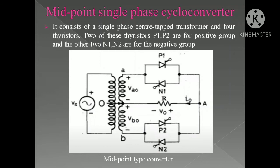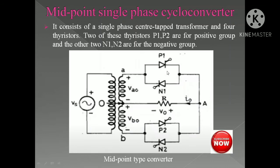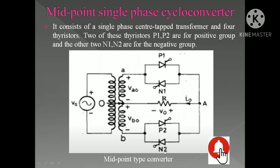Let me show you the electrical equivalent circuit diagram for this midpoint single phase cycloconverter. We have an AC source and a center-tapped secondary single-phase transformer. When you have a center-tapped transformer, you get voltage on the secondary side on both windings similar to the primary. When the AC source is connected, you have two anti-parallel connected thyristor configurations: P1, N1 and P2, N2. P1 and P2 are the positive group thyristors, and N1 and N2 are the negative group thyristors.